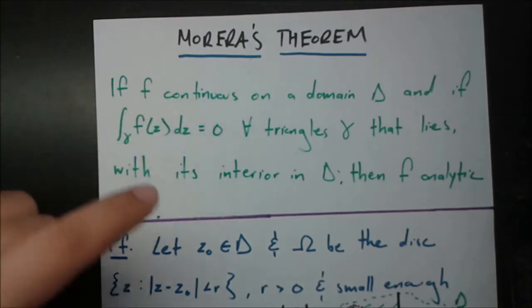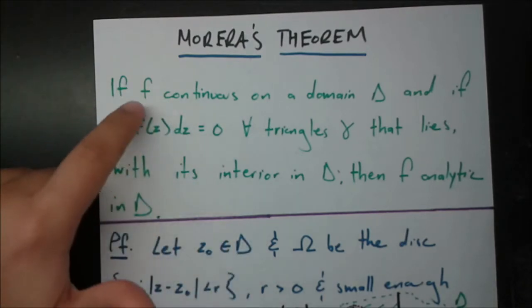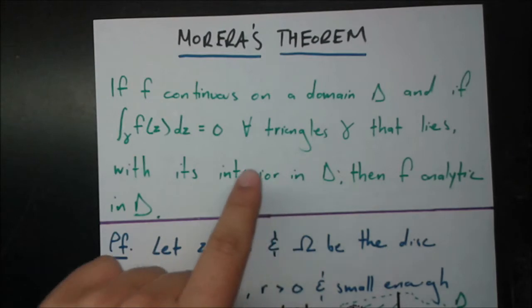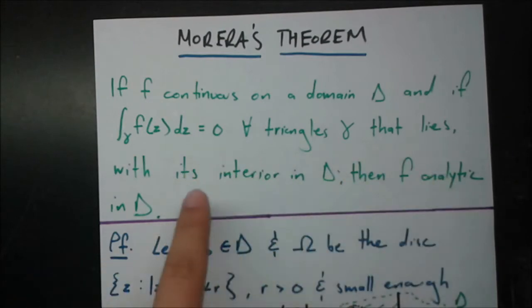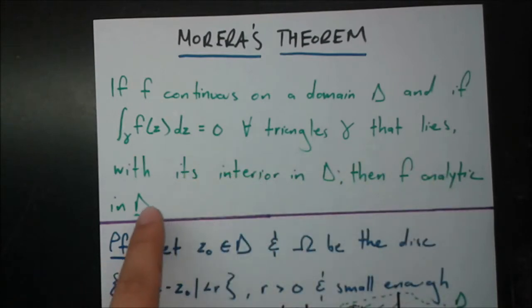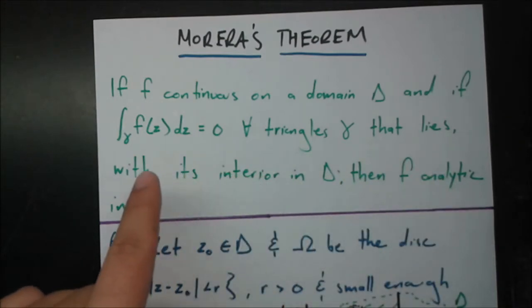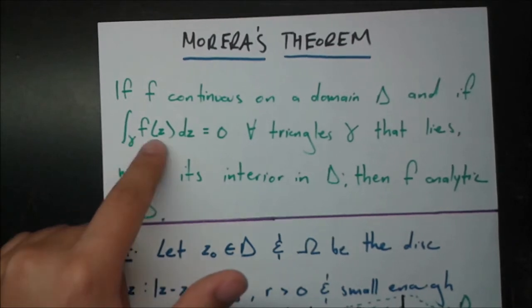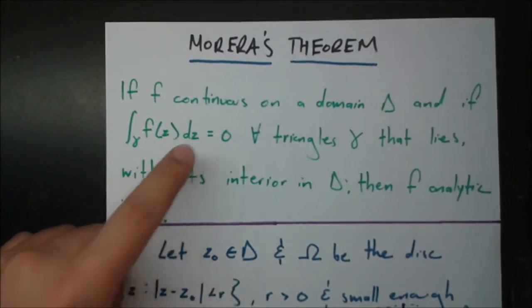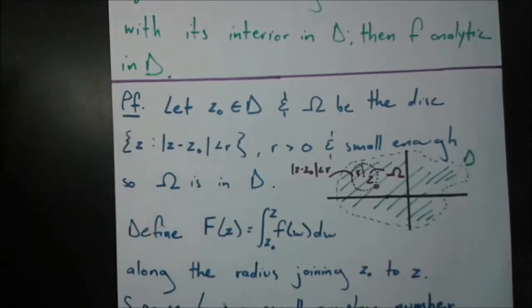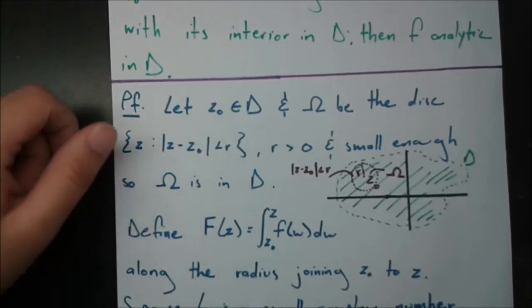The conditions are that f has to be continuous — not necessarily analytic yet — on a domain D, and for all triangles that lie together with the interior in D, if you take the line integral over that loop, it's going to be 0. So let's go ahead and try to prove this. It's not too bad.